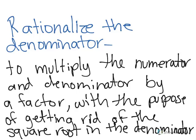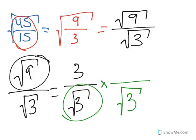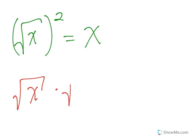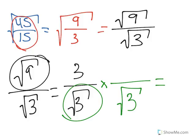We can simplify the numerator and turn this into 3 over square root of 3. However, remember that rationalizing means getting rid of the square root in the denominator, so we haven't rationalized anything yet — we have just been simplifying, which doesn't count as rationalizing. Now we will actually rationalize by multiplying the denominator by square root of 3. Any square root squared gives you the original number: square root of x times square root of x equals x.